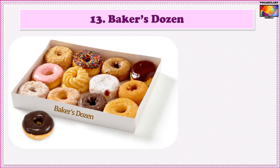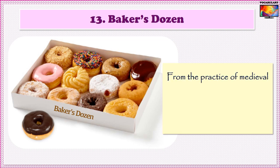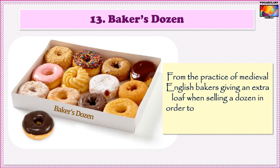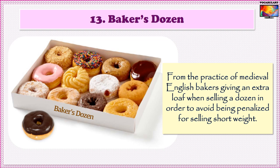Next is Baker's dozen. A dozen as we know means twelve. The idiom Baker's dozen is an exception, however. It is widely believed that this phrase originated from the practice of medieval English bakers giving an extra loaf when selling a dozen, in order to avoid being penalized for selling short weight. So twelve plus an extra one makes thirteen, and Baker's dozen means thirteen.